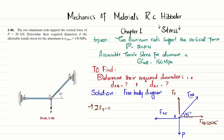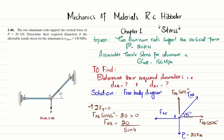The y-component of FAB is FAB·sin(45°), and the x-component is FAB·cos(45°). The vertical component FAB·sin(45°) and P of 20 kilonewtons acting downward must sum to zero. So FAB·sin(45°) minus 20 = 0, giving FAB equal to 20 divided by sin(45°).